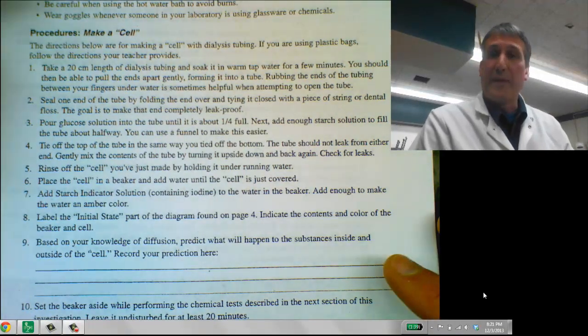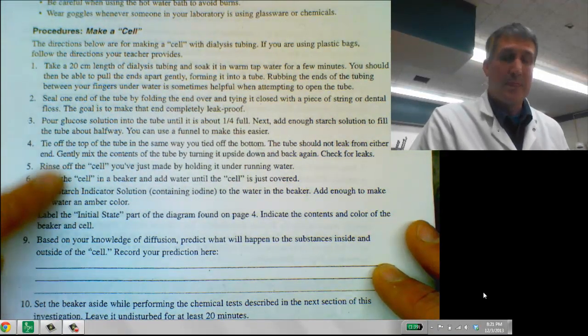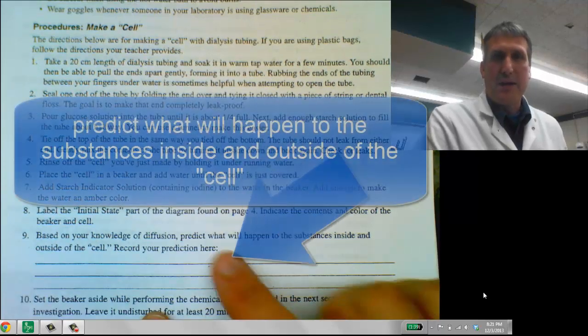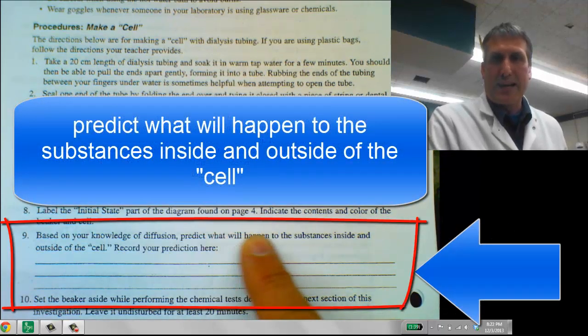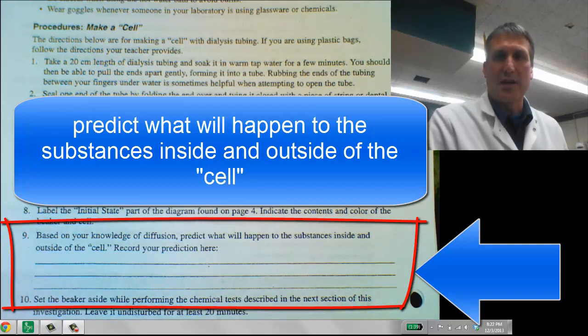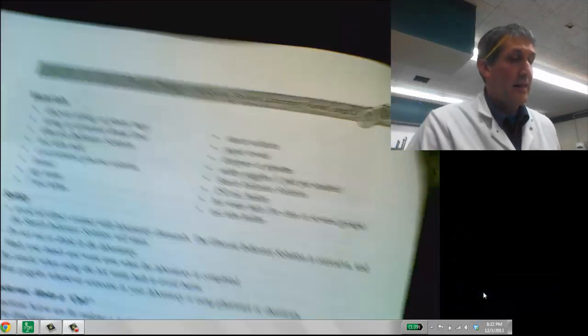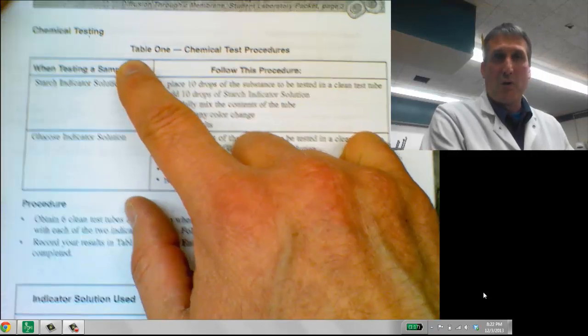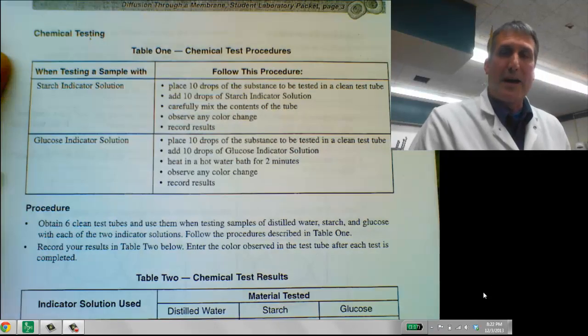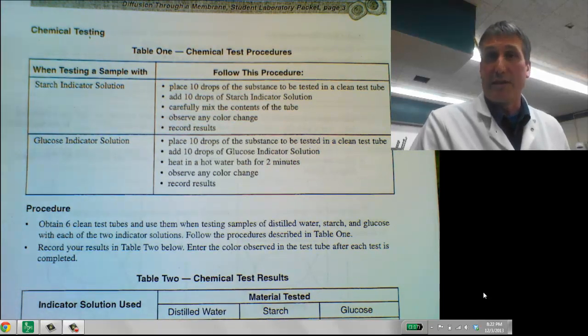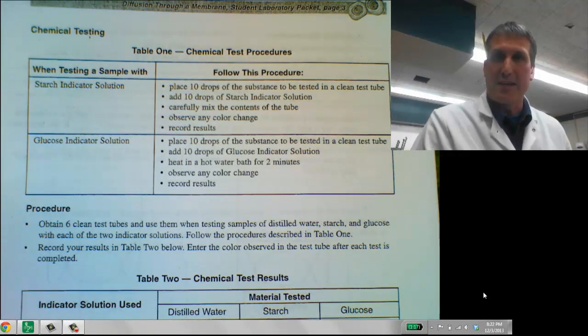So this video has covered the information that you need to make the cell and complete the setup. Make sure that you make a prediction here. So based on your knowledge of diffusion, predict what will happen to the substances inside and outside the cell. Record your prediction here. The next part, which we'll cover in another video, we're going to talk about the chemicals, the chemical indicators that we're going to use to be able to tell if these molecules move.